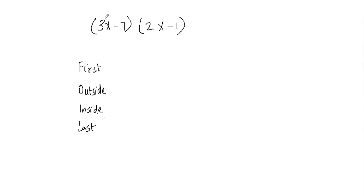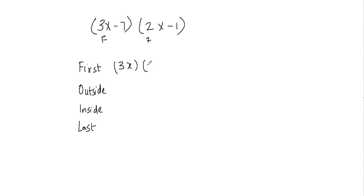Let's identify the first term of each binomial. The first term in this binomial is 3x and the first term in this binomial is 2x. These are the first terms and we're going to multiply them together, so we have 3x times 2x.